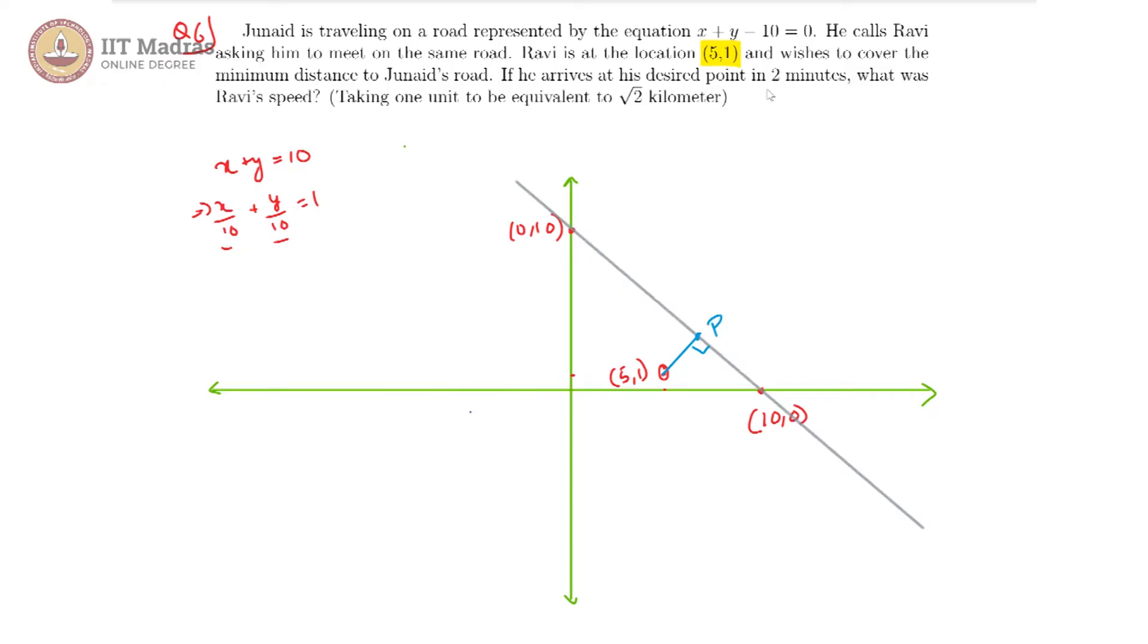And he arrives at this point p in 2 minutes. We are being asked, what is Ravi's speed? We need to first find out, assuming Ravi's original location 5 comma 1 is r, if we find out what rp is, then we should be able to find out the speed. rp is basically the shortest distance of r from this particular line.